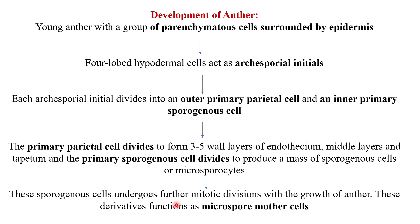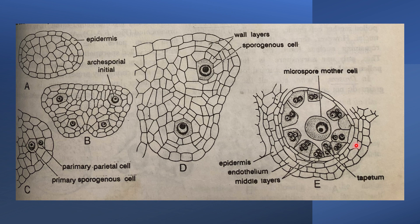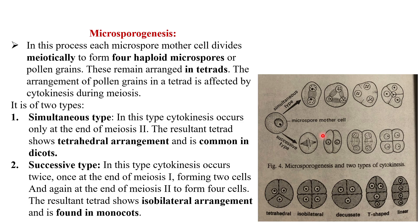The sporogenous cells undergo further mitotic divisions with the growth of the anther, and their derivatives function as microsporocytes. Then microsporogenesis occurs: each microspore mother cell divides meiotically to form four haploid microspores by meiosis, which remain in tetrads.